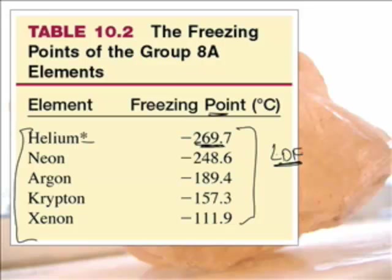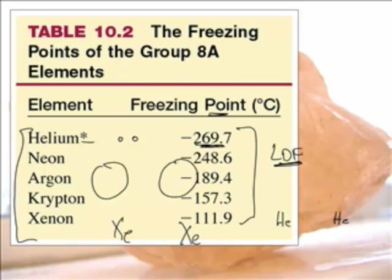It's just one atom trying to stick to another atom. Helium is really small — it's the smallest of all atoms. But xenon is really big by comparison, and since he's got more electrons moving around, you get more London dispersion forces. This is why xenon's boiling point is minus 111°C, which is still pretty cold, but compared to helium, it's downright hot.